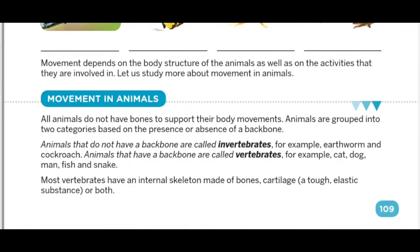Now our first topic: Movements in Animals. Animals में movements कैसे होता है? All animals do not have bones to support their body movement. Animals are grouped into two categories on the basis of the presence or absence of backbone. पहली category जिनके अंदर backbone होती है, और दूसरी category जिनके अंदर backbone नहीं होती है।